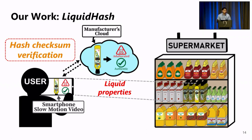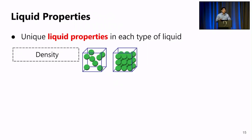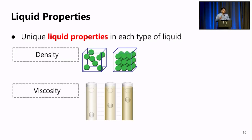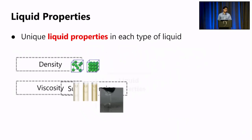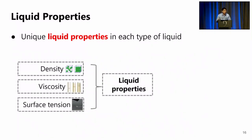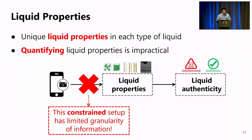Before going into details of Liquid Hash, let's talk a little bit more about the liquid properties, which is the signature of the liquid content. According to physics, each type of liquid has unique liquid properties. These properties include density — the amount of liquid molecules in each volume of the liquid — and viscosity, the resistance force an external object may experience when moving inside the liquid, and also surface tension, which is the force acting along the boundary of the liquids. As these liquid properties are unique, intuitively we can use them to determine the liquid authenticity. But we do have a big problem here.